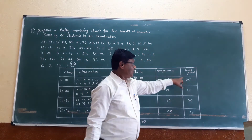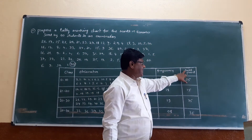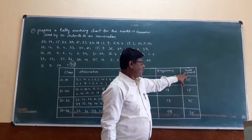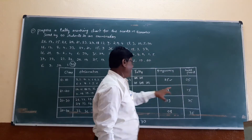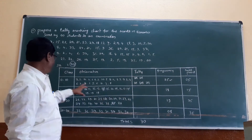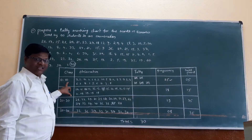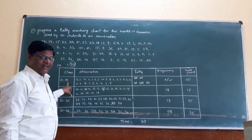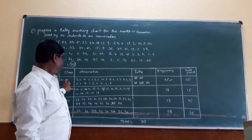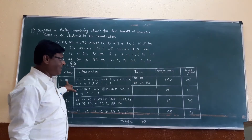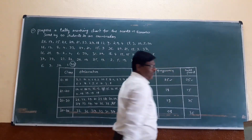How to find the midpoint: for class 0 to 10, the midpoint is 5. It is calculated as 0 plus 10 divided by 2, which equals 5. That is the midpoint.